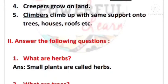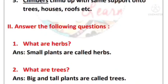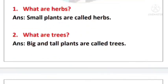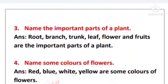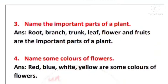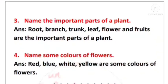Second main: Answer the following questions. Number one: What are herbs? Answer: Small plants are called herbs. Number two: What are trees? Answer: Big and tall plants are called trees. Number three: Name the important parts of a plant. Answer: Root, branch, trunk, leaf, flower, and fruits are the important parts of a plant.